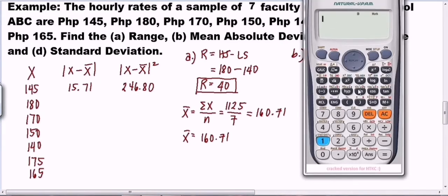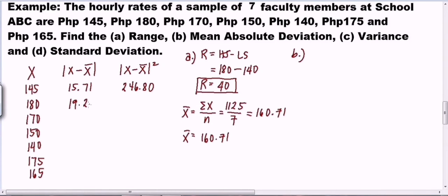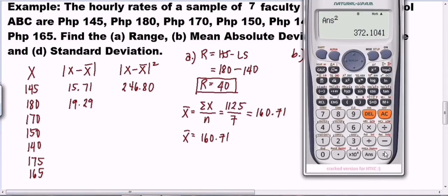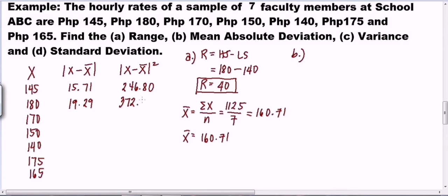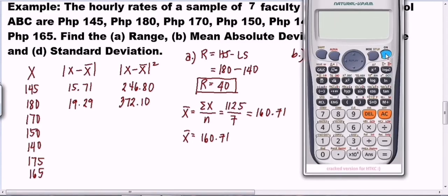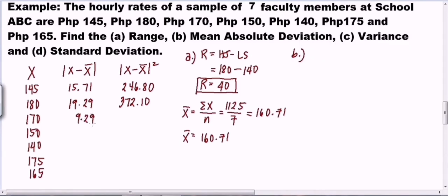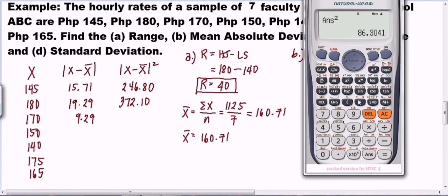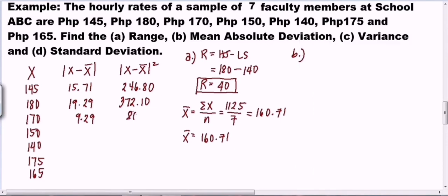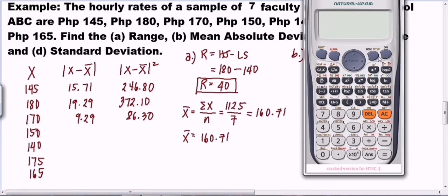The next X is 180: 180 minus 160.71 equals 19.29, and its square is 372.10. Then for 170: 170 minus 160.71 equals 9.29, and its square is 86.30.